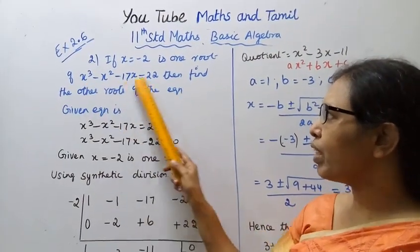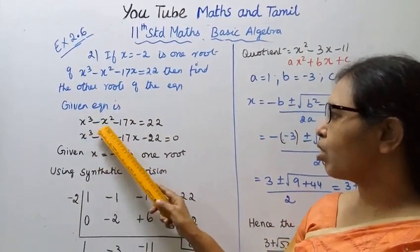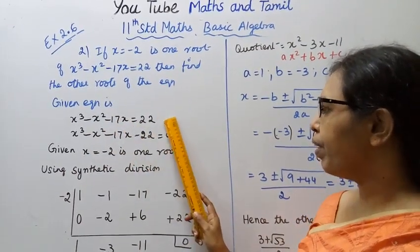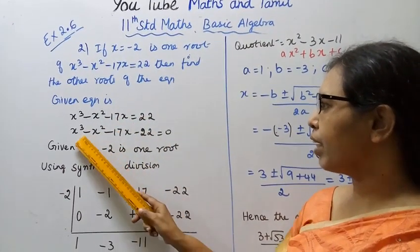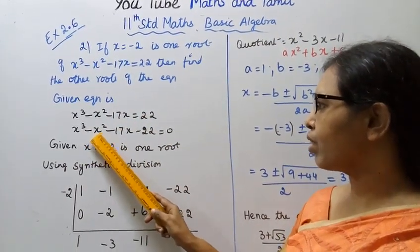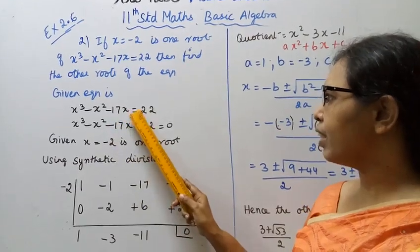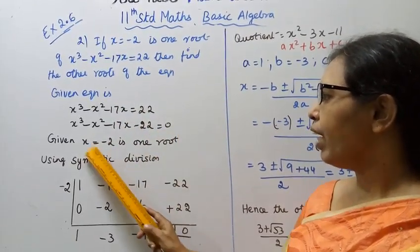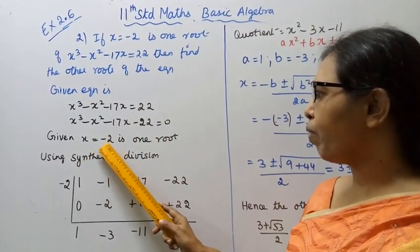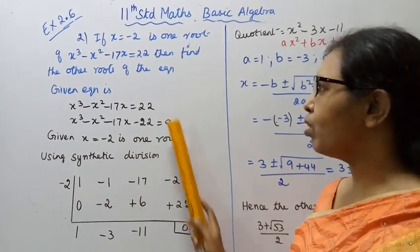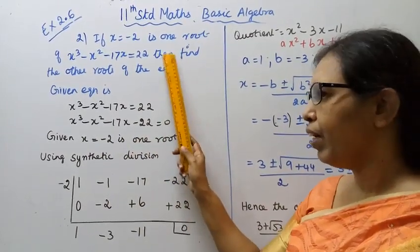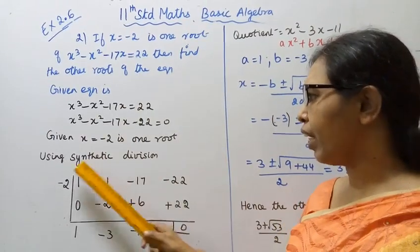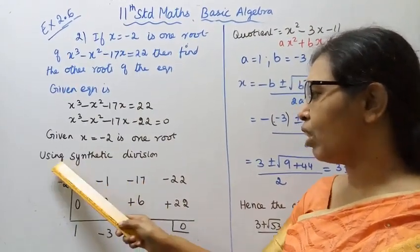It is a cubic equation. Given equation: x cube minus x square minus 17x equal to 22. This is x cube minus x square minus 17x minus 22 equal to 0. x equal to minus 2 is one root. I will use synthetic division.